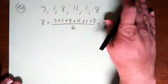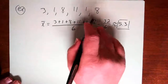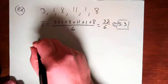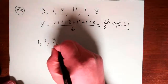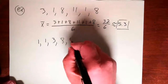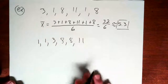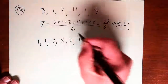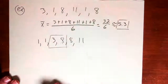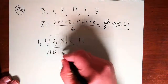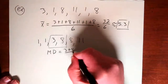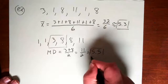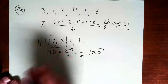Now the median is the middle value, and it's very important that you put the data in order first. If it's not in order, any value could technically be in the middle. Ordered from least to greatest: 1, 1, 3, 8, 8, 11. There are 6 values — an even number — so I split it in half, getting two groups of 3. There's no single middle value, so I take the two middle values, 3 and 8, average them: 3 plus 8 equals 11, divided by 2, giving 5.5. That is the median, halfway between the two middle values.